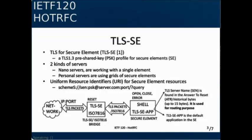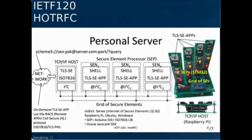When routing is needed, we use something imported from TLS called TLS server name, and we call that the secure element name. We put it in something which is physical and which is collected upon reset, called the answer to reset, so you get a 15-byte field. We use that for routing, and it gives you a kind of uniform resource identifier.